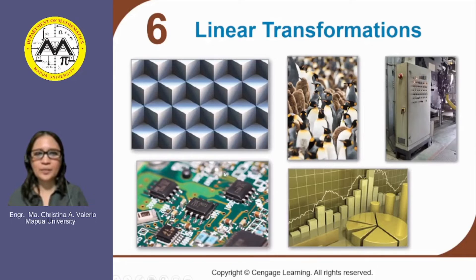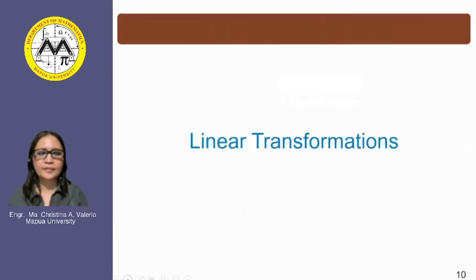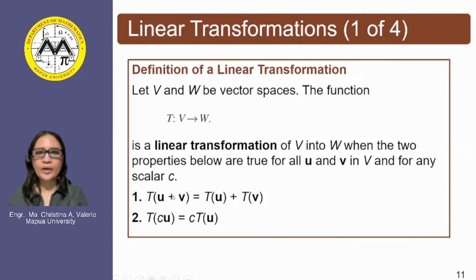Last time we were able to learn how to find the image of a vector as well as the pre-image of a vector under the transformation. In this discussion, we are going to have two important properties of linear transformation. Now, what is a linear transformation? Let V and W be vector spaces.